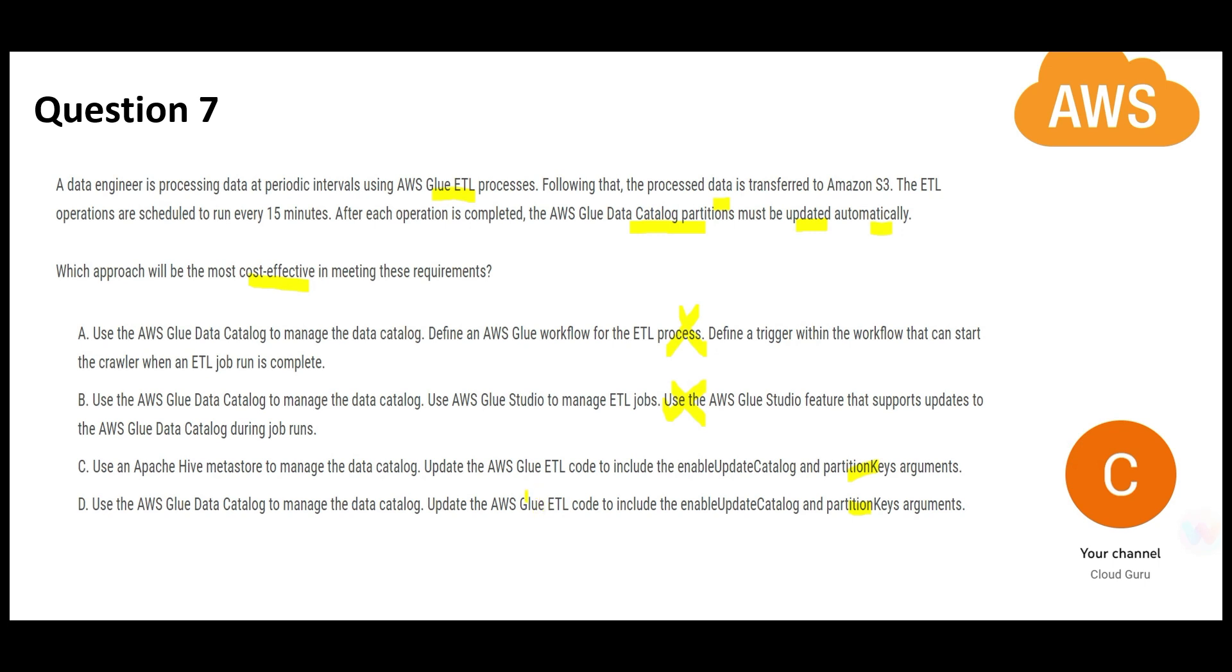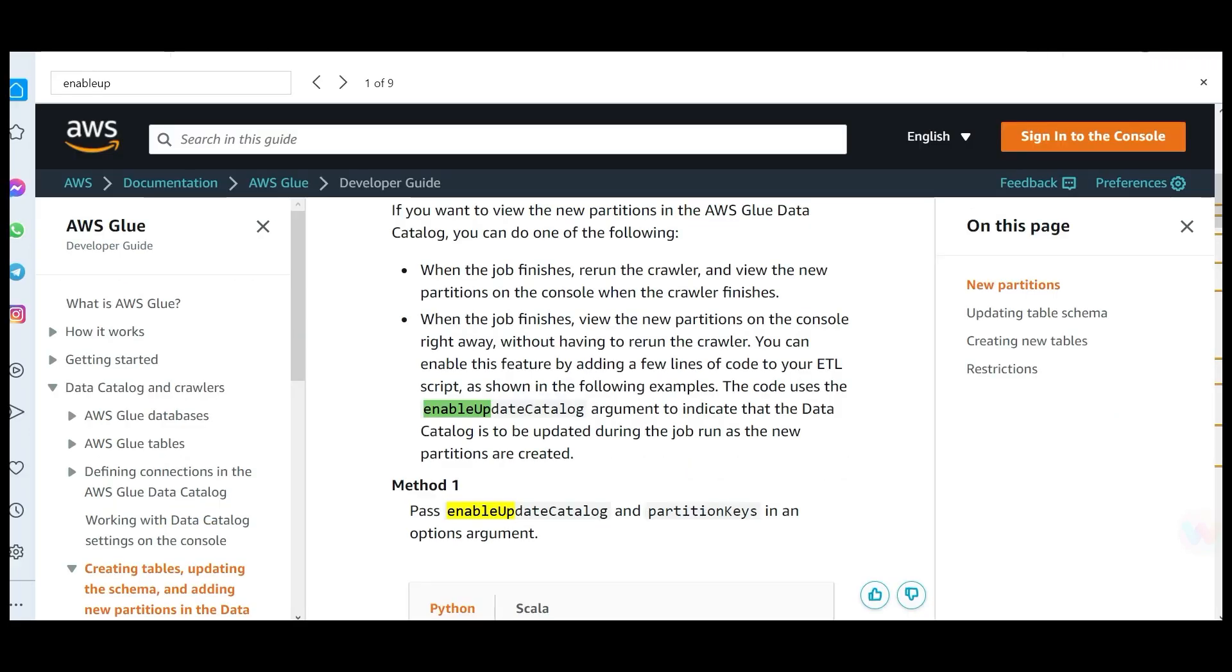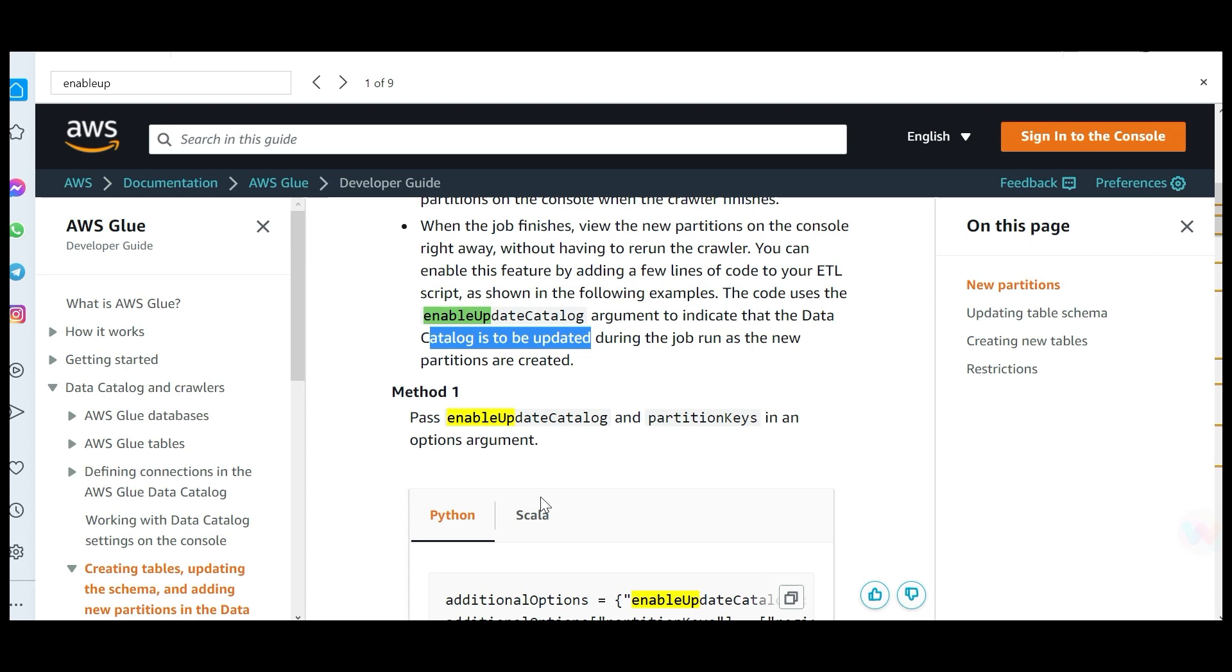If I compare between C and D, the second part is the same, so we have to decide between these options. We want most cost-effective. Hive is not the most cost-effective compared to data catalog, so my answer would be D. If you see this documentation, the code uses enable update catalog argument, and you have to put this if your data catalog is to be updated. You need to pass partition keys as an optional argument.